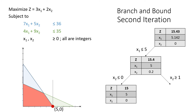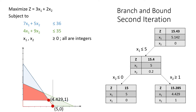And on the right, we have x2 greater than or equal to 1. Graphing x2 greater than or equal to 1, we find out that it has a non-integer solution, which are x1 equals 4.429 and x2 equals 1. Because the solution at x2 greater than or equal to 1 still does not satisfy the integer restriction, let's move on to the third iteration.